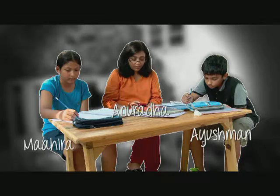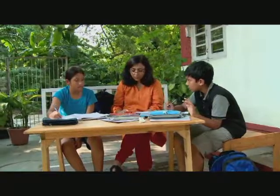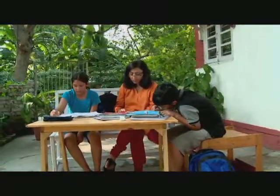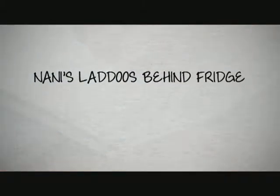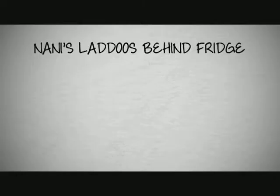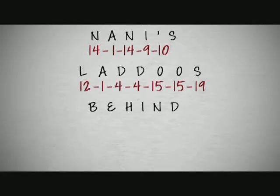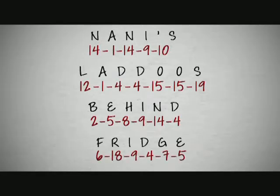Ayushman and Mahira are studying under the watchful eye of their mom. Now Ayushman wants to let Mahira know where the laddus their nani sent is hidden without his mom catching on. So he writes 'Nani's laddus behind fridge' in code. He very simply assigns values to each letter: A equals 1, B equals 2, and so on. So here's what the message would look like. This is very simply encryption.